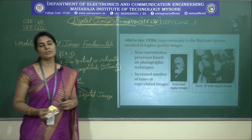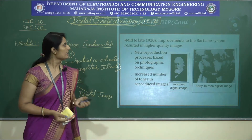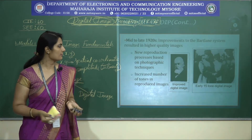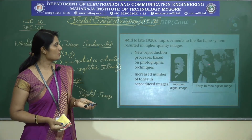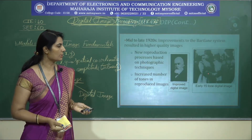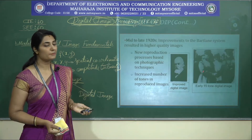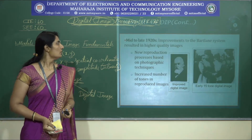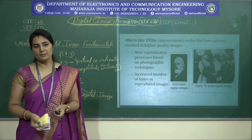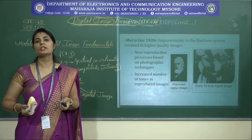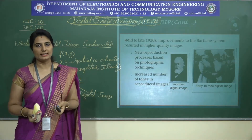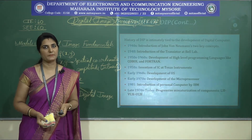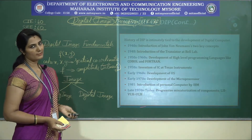In mid to late 1920s, with the improvement of the Bartlane cable picture transmission system, image quality improved from 5 tones to 15 tones — from 5 to 15 discrete intensity levels. These images were processed using photographic techniques. Though this system used digital images, the images were not processed by computers as computers had not yet been invented. The history of digital image processing is intimately tied to the development of the digital computer.